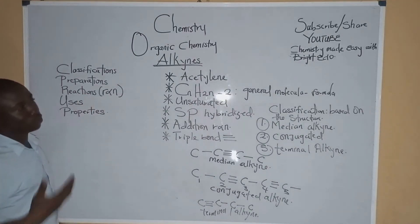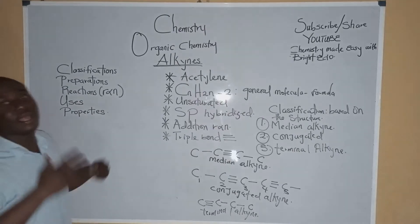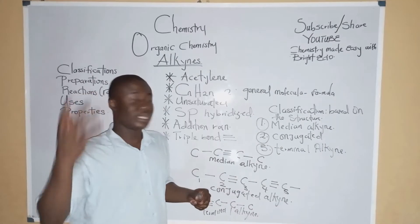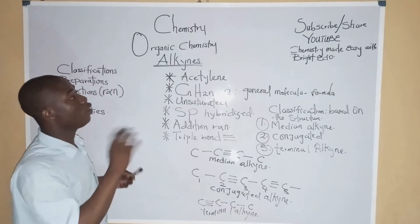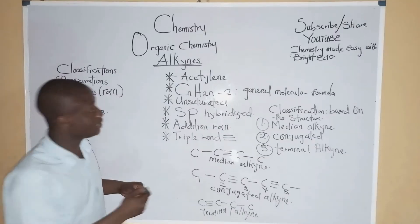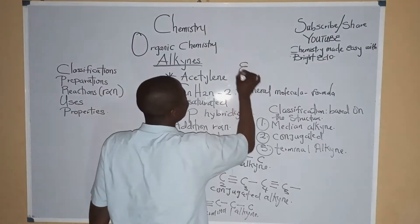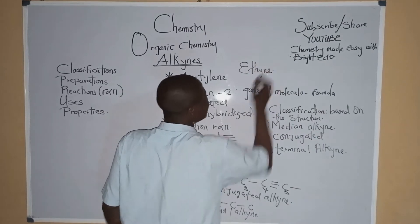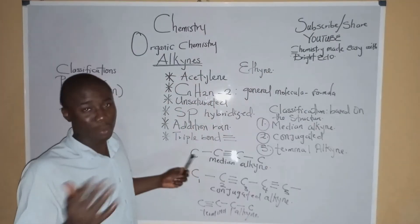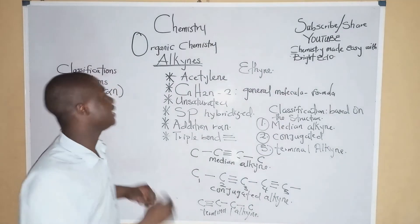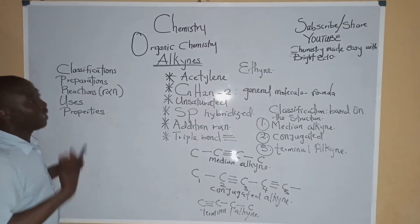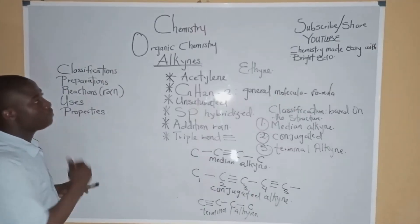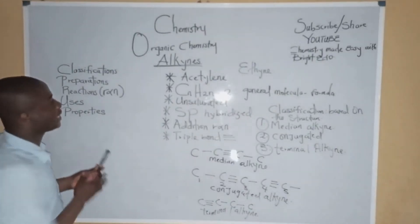Now let's talk about the preparations of alkynes — how do we prepare alkynes? We should take note that the first member of the alkyne series is acetylene. Acetylene is the first member of the alkyne family. Our focus is on the first member, which is acetylene.